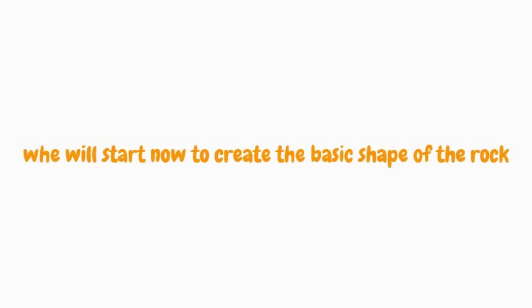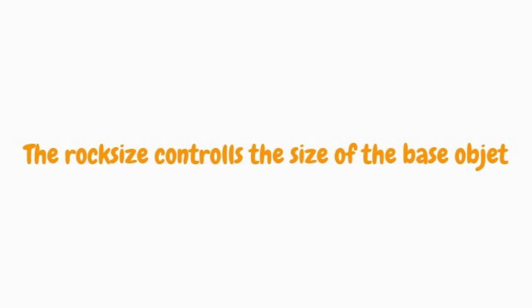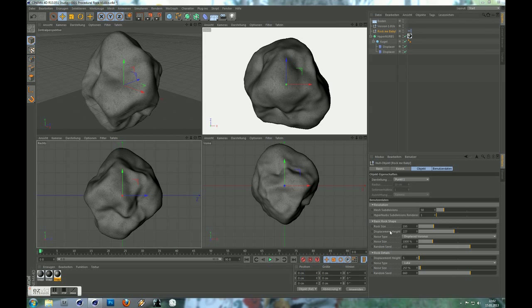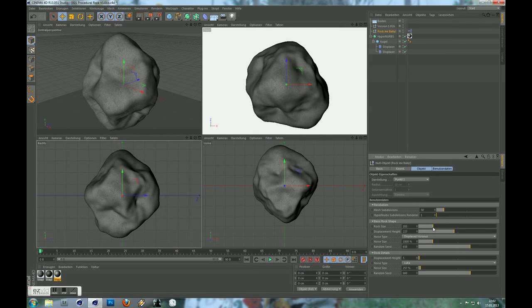We will now start to create the basic shape of the rock. Keep the noise type set to Displaced Voronoi for a nice rocky shape. The rock size controls the size of the base object. For now, leave the noise size at 1800 — you may change this if you choose another noise type.